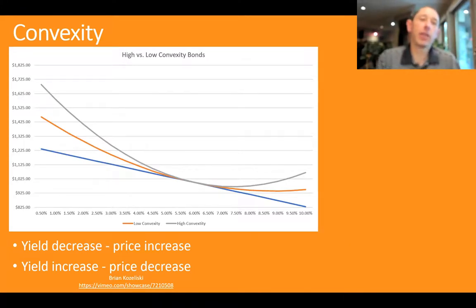Recall that as the yield decreases, then the bond price increases. And as the yield increases, the bond price decreases. You can see that in a linear relationship with that blue line here. But we're going to look at two different bonds. We know that this price-yield relationship is not perfectly linear. That's where convexity comes in. So we have two bonds here, a low convexity bond and a high convexity bond in the chart here.